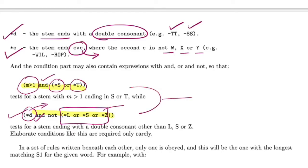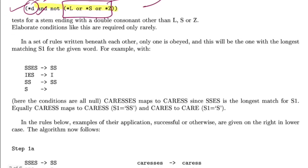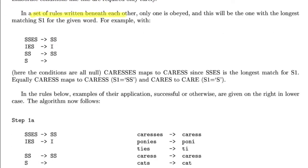In this format, you can think of making a number of certain rules to derive the stem. In a set of rules written beneath each other, only one is obeyed. These set of rules are followed in a maximum spanning fashion. For example, if you have the word caresses, the stem you'll get from all these rules would be caress.